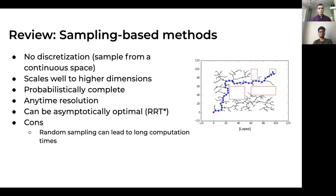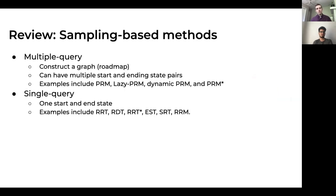A downside of sampling-based methods is that random sampling can just take a long time to compute. There are also distinctions between them. Multiple query methods take a batch of samples at once, create a graph — called a roadmap in some planners — and can handle multiple start and end pairs. Single query methods, like RRT, do one sample at a time with one start and end location.